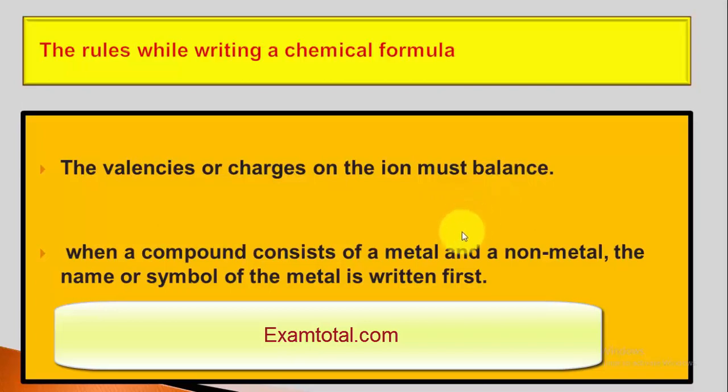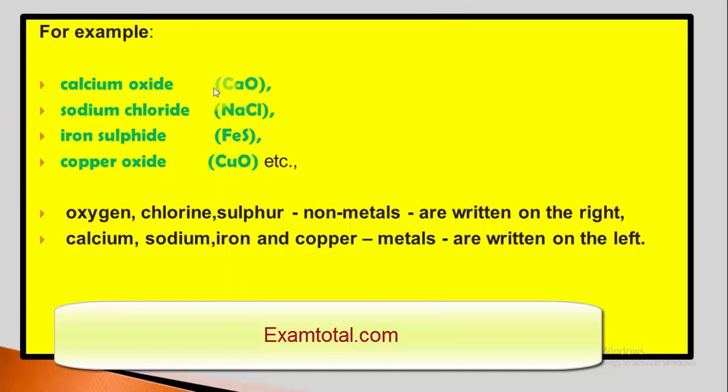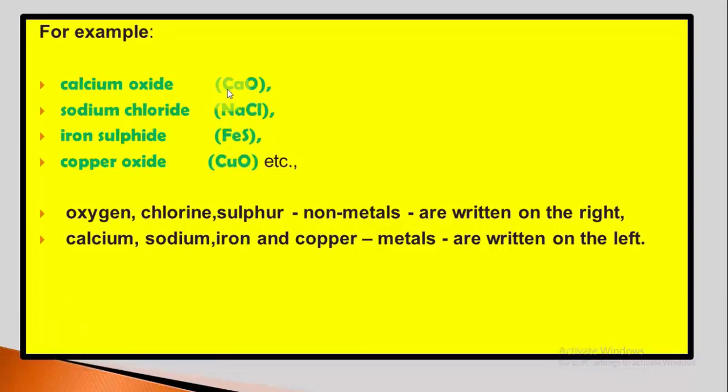When a compound consists of a metal and non-metal, the name or symbol of metal comes first in the preference order. For example, calcium oxide. Calcium is a metal. Oxygen is a non-metal, so oxygen oxide came later. Chemical formula is written with calcium first. Metal is written first. Oxygen is written later. Sodium chloride NaCl. Sodium is a metal and chloride is a non-metal. Similarly, iron sulfide FeS. Fe is the symbol of iron and this is sulfur. Then copper oxide. Oxygen, chlorine, sulfur, they are non-metals written on the right. And calcium, sodium, iron, copper are metals written on the left.